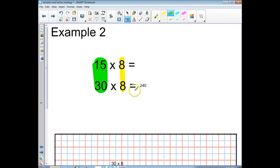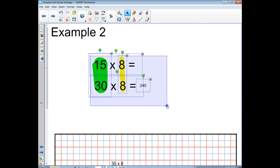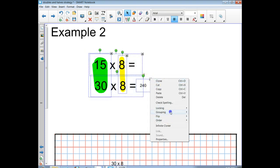So that means that half of our answer is going to be the answer to 15 times 8. So let me prove it to you with an array. I'm going to group this, shrink it down a little bit.